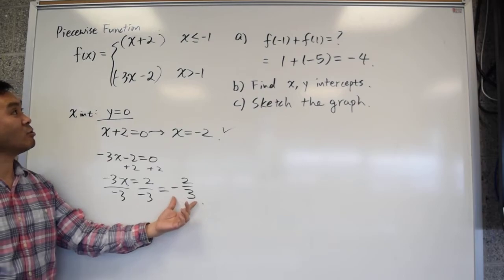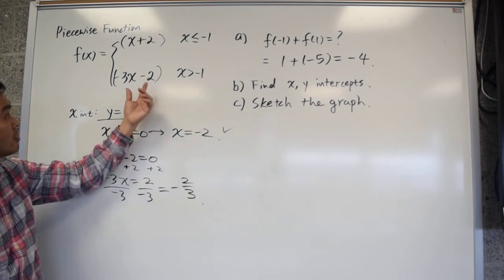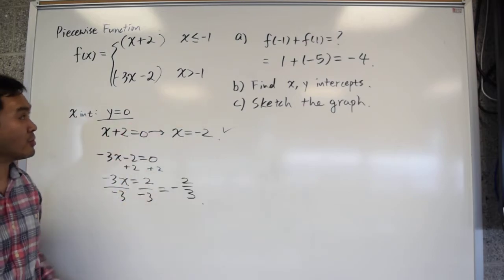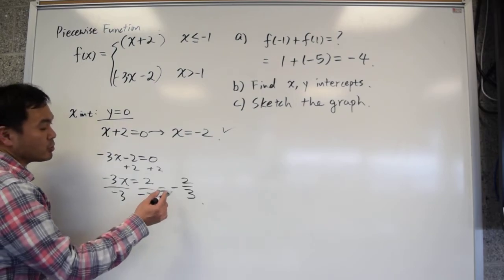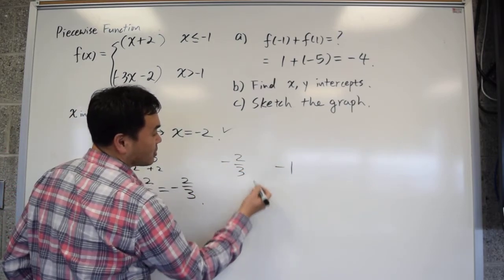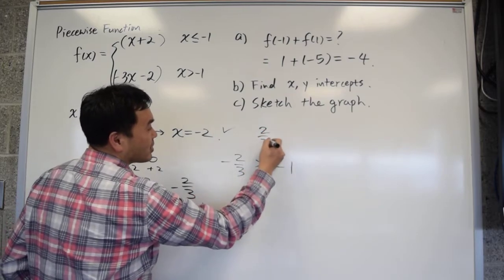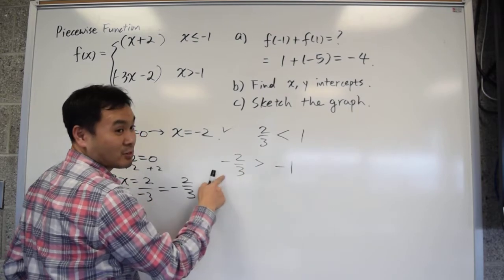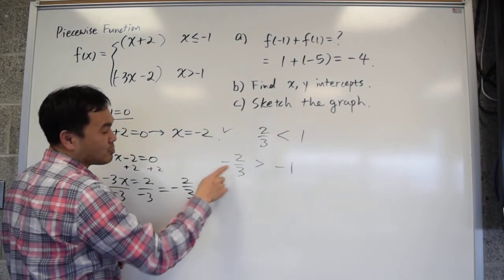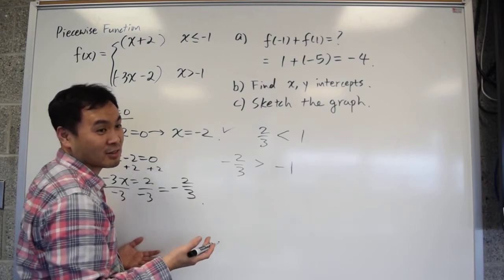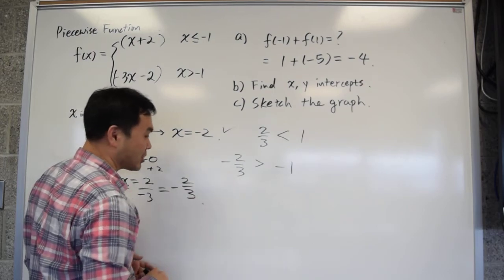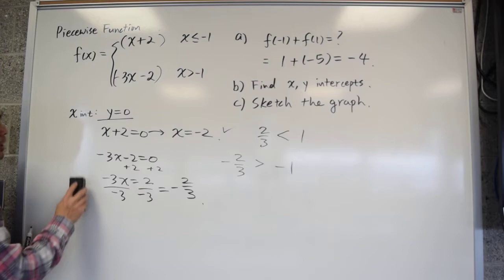What about negative 2 thirds? If you plug it in, it gives zero — but is negative 2 thirds bigger than negative 1? Yes, it is. Since 2 thirds is less than 1, if you multiply both sides by negative 1 the inequality flips. Numerically, negative 2 thirds is about negative 0.66, which is closer to zero than negative 1, so negative 2 thirds is greater than negative 1. So this satisfies the second condition.